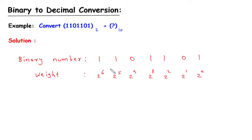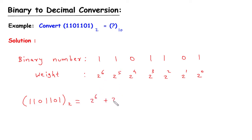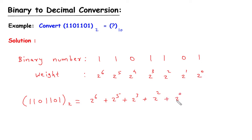Now we have to find the decimal equivalent. So this will be 1 1 0 1 1 0 1 binary, which is equal to 1 into 2 raise to the power 6, so we can write directly 2 raise to the power 6, plus 2 raise to the power 5. Now here we can see this digit is 0, so 0 into anything is 0. Then 1 into 2 raise to the power 3, then plus 2 raise to the power 2. Then again here it is 0, so we will skip this. Then 2 raise to the power 0, that is 1.